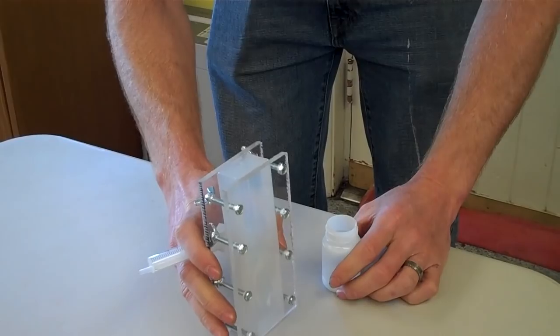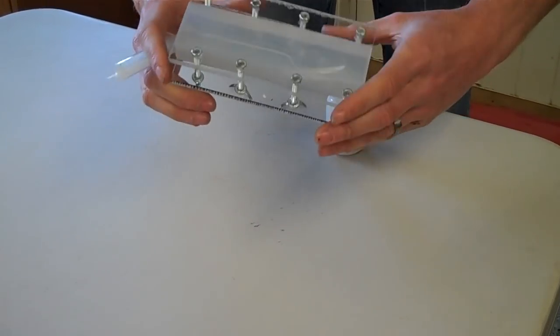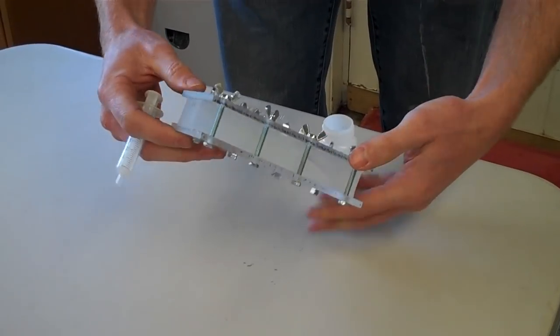All right, today we're going to go over our newest product, our Gallium Spoon Mold. And so basically you just assemble it, put your bolts and your wingnuts together.